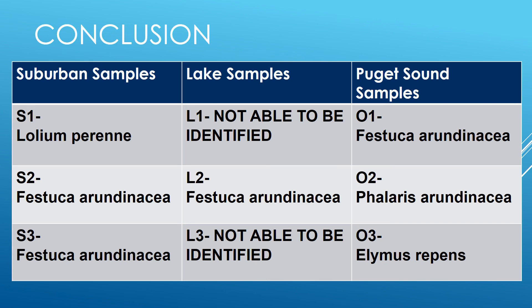To continue this research, tests will be run with primer sets for TRNH-PSBA and PSBM-TRND. These loci are also known for containing variability between species. Hopefully, the genetic information isolated from them in combination with the evidence from the loci RBCL and MATK will be sufficient to identify all samples.